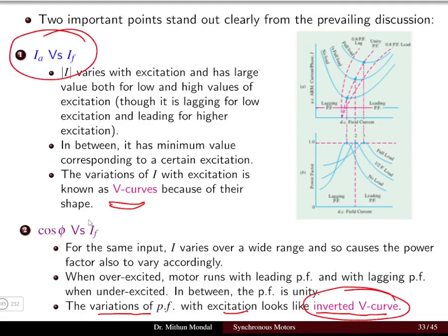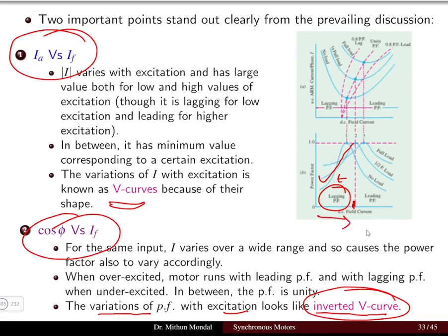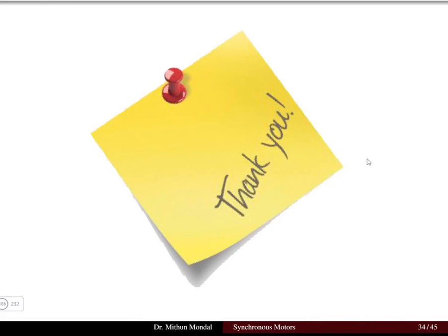On the left-hand side of the inverted V, the power factor is lagging, and as field current increases, the power factor increases toward unity. Once the power factor becomes leading, the curve decreases on the right-hand side. Different curves are shown for full load, half load, and no-load conditions. In this lecture we have discussed how excitation plays an important role in changing the armature current and the power factor. Thank you, see you in the next lecture.